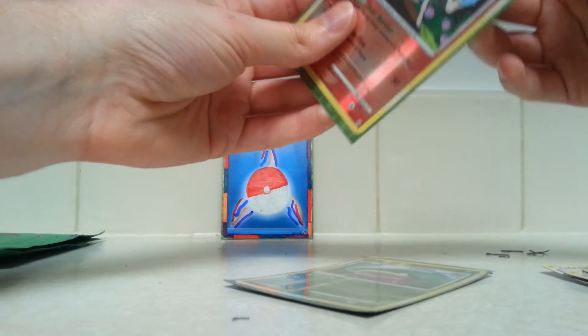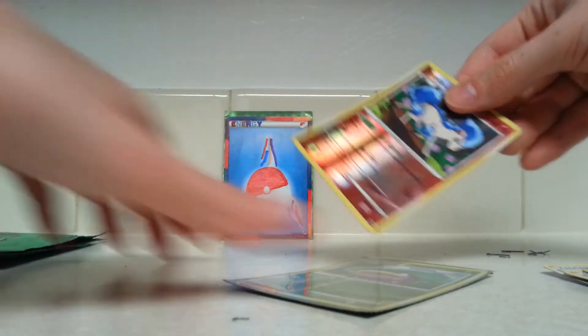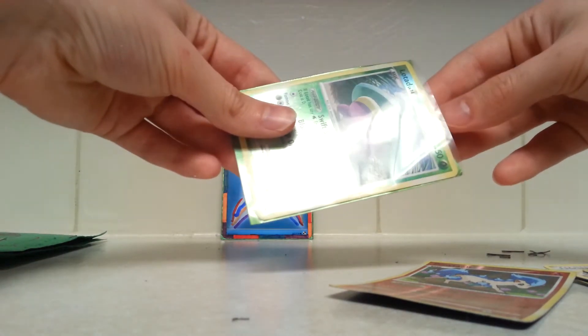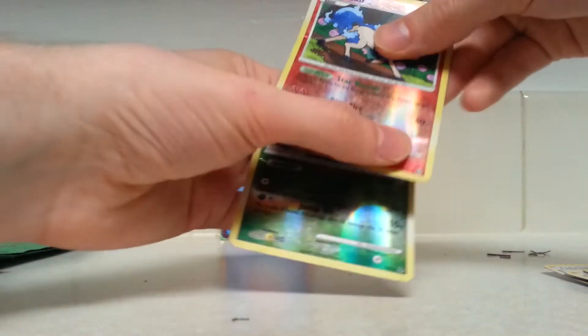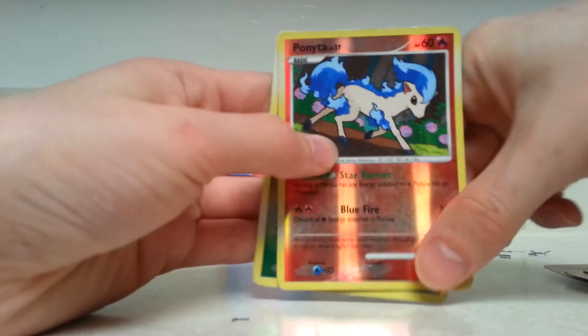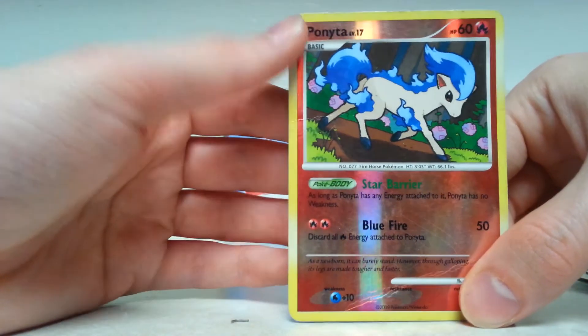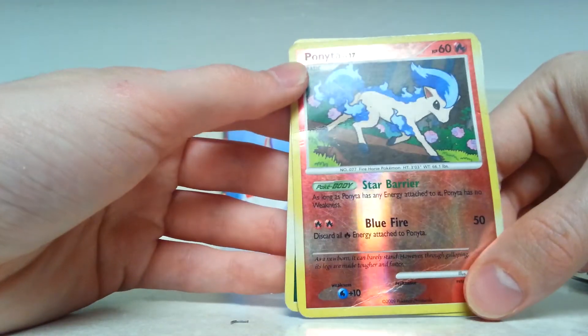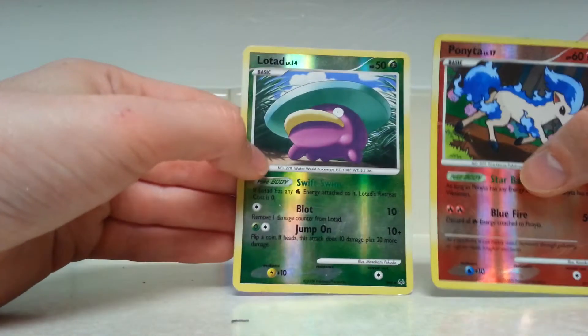But yeah, thank you so much for the trades. Let me get these out. Especially the Ponyta. Ponyta is one of my favorites and blue is my favorite color. So getting this Ponyta was definitely high on my list for collecting needs. And then the Lotad's just kind of a bonus trade.